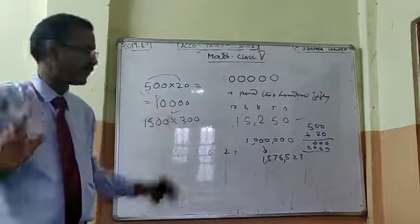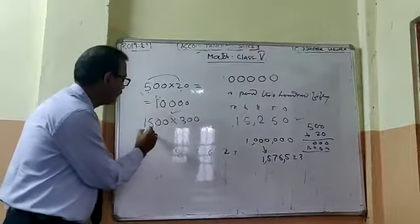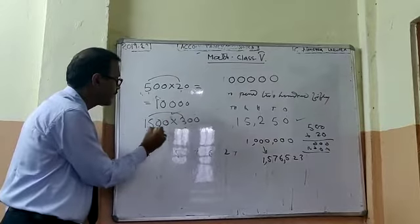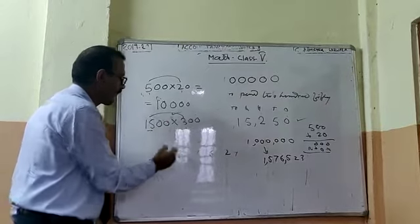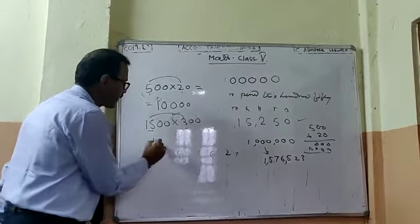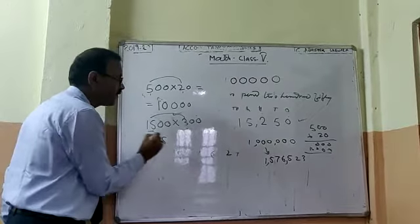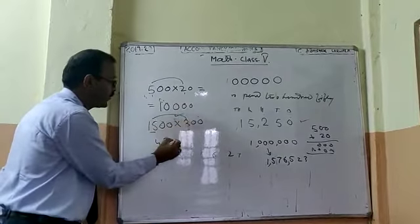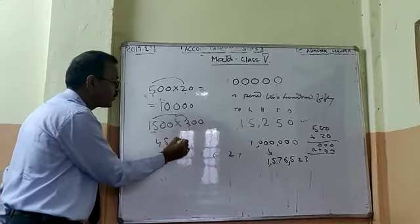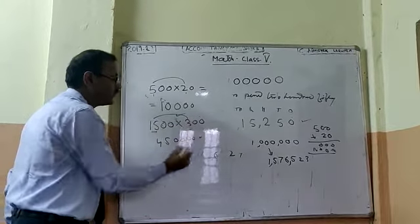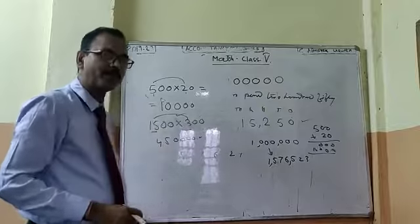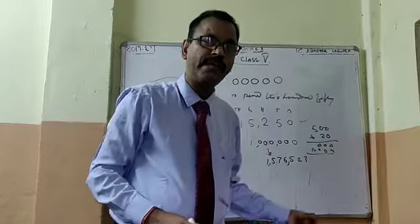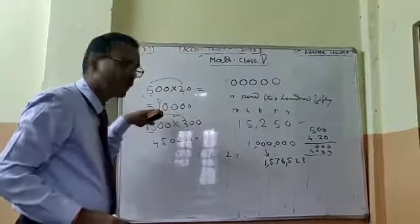Same process here. Multiply the non-zero parts: fifteen into three. Multiply: three times five is fifteen, three times one is three — so forty-five. Now count the zeroes: one, two, three, four — four zeroes. You have to practice this multiplication at home. As for the zeros, zero, zero — okay.